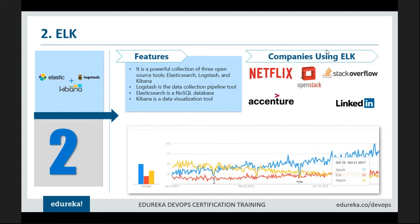ELK stands for Elasticsearch, Logstash, and Kibana — a powerful combination of three open source tools. Logstash is a data collection pipeline tool. Elasticsearch is a NoSQL database that works without predefined schemas. Kibana is a data visualization tool for visualizing the captured data. Companies using the ELK platform include Netflix, OpenStack, Accenture, and LinkedIn.